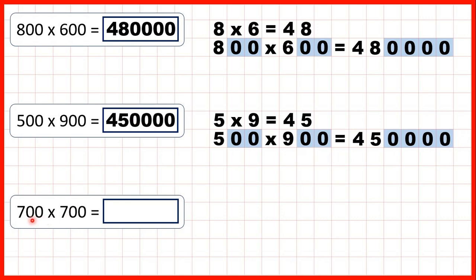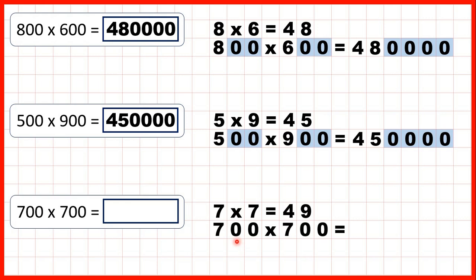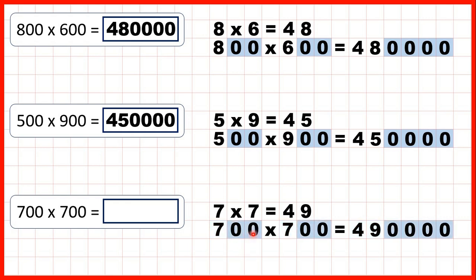For 700 times 700, we can work out that 7 times 7 is 49, and that will help us solve 700 times 700. We get 490,000 because after we've worked out 7 times 7, we just count the end zeros in the multiplication question and make sure our answer has the same number of end zeros: 490,000.